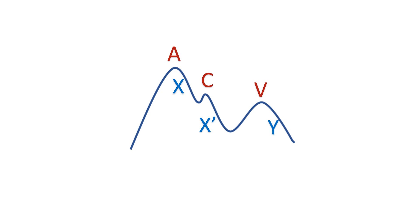Jugular venous pulse tracing resembles the right atrial pressure tracing. It has three positive waves — A, C, and V — and two negative waves — X and Y descents. An X' descent may be seen after the C wave. During clinical examination, the descents are better appreciated than the waves, of which the Y descent is the most prominent.